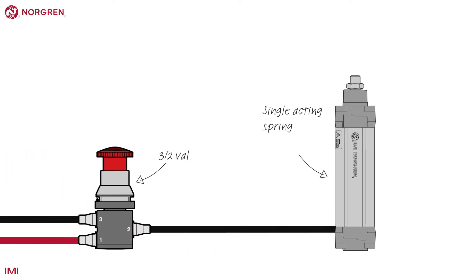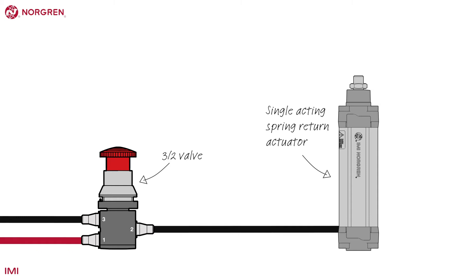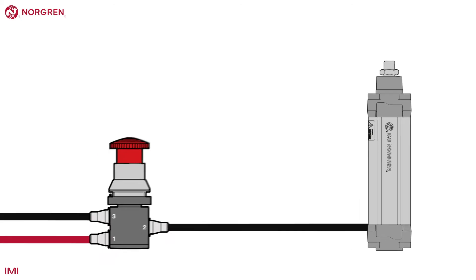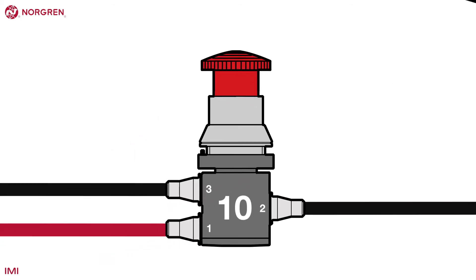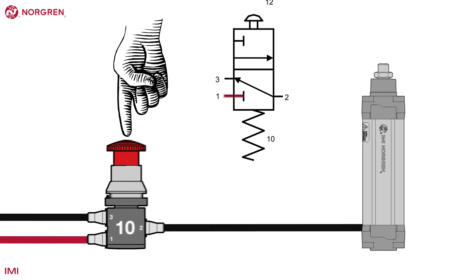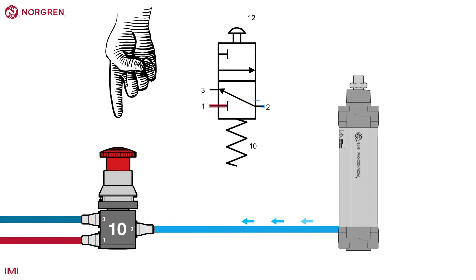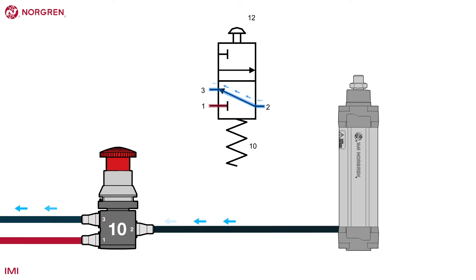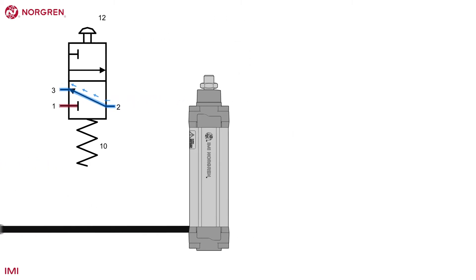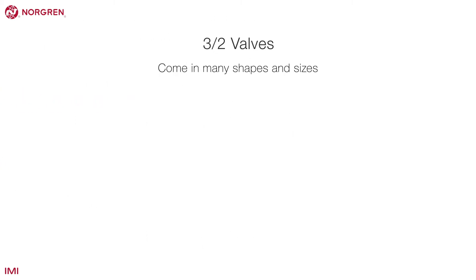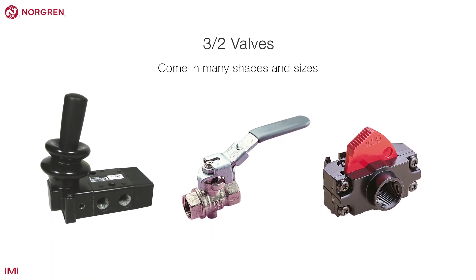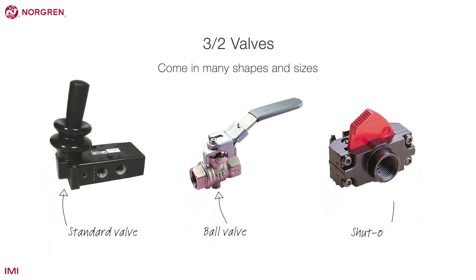Here is a simple example of a 3-2 valve operating a single acting spring return actuator. Initially the system is at rest, the button is not pressed and the valve is in the 1-0 position, so no air is passing to the cylinder. When the button is pressed, the valve moves into the 1-2 position and air passes through the valve to the cylinder. When the button is released, the valve moves back into the 1-0 position and the air between port 2 and the cylinder vents through the exhaust port. 3-2 valves come in many shapes and sizes, but the principle is always the same, whether it's a standard valve, a ball valve or a shut-off valve.